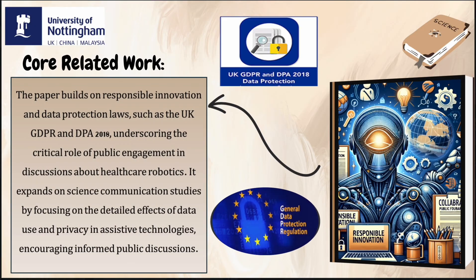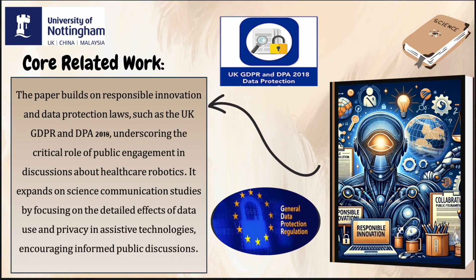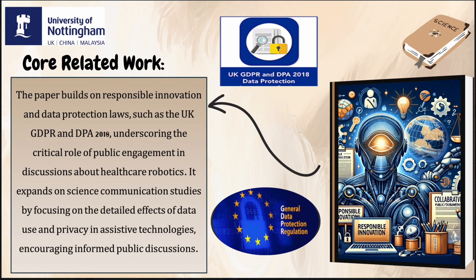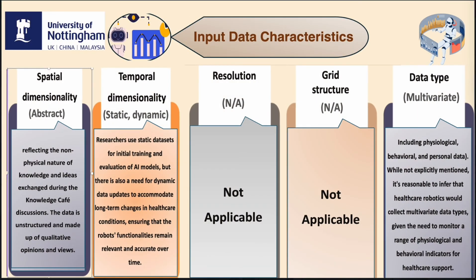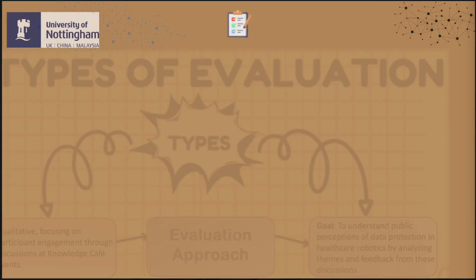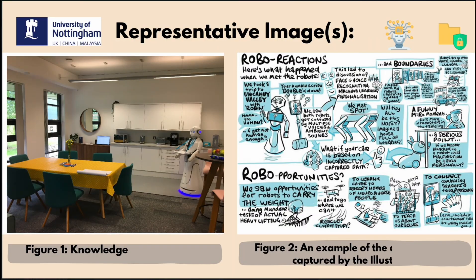This work builds upon the UK GDPR and the Data Protection Act 2018 for ethical healthcare robotics. Healthcare robotics use abstract, static, and dynamic data, adjusting to evolving care needs. The evaluation is qualitative, analyzing public feedback on data protection and healthcare robotics from the Knowledge Cafe discussions.